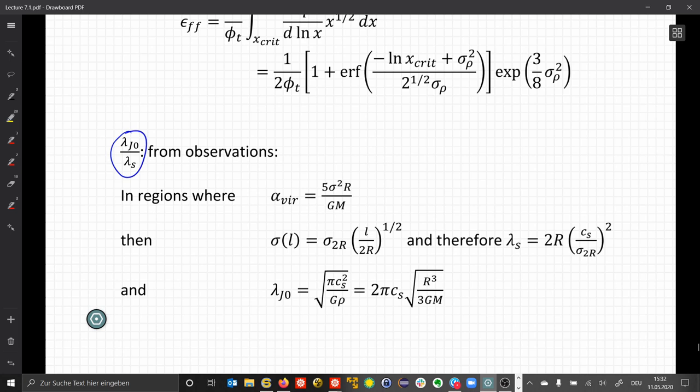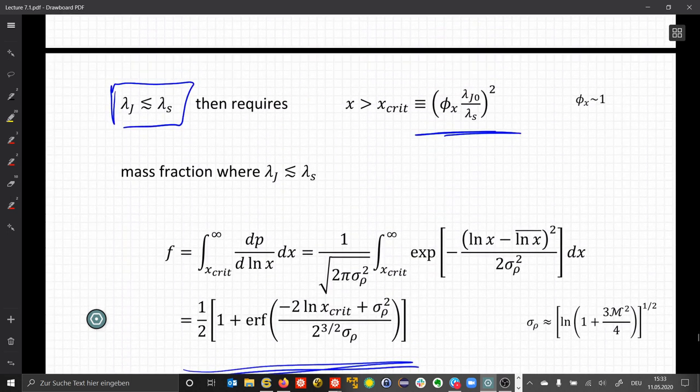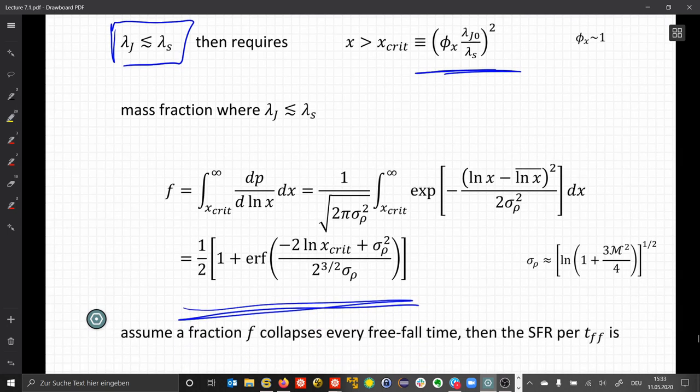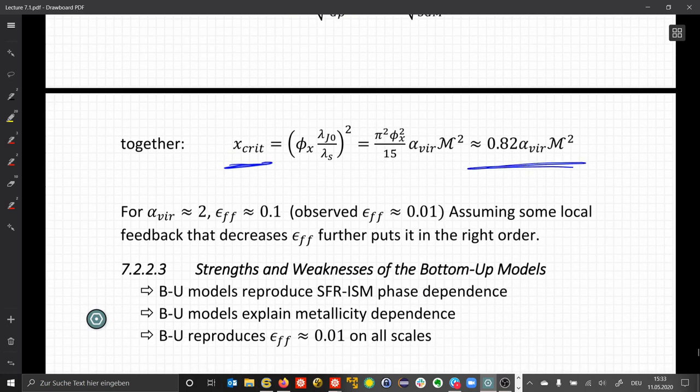We find this here from observations. We find a virial ratio that can be written here in terms of the radius and the velocity dispersions. Then our line-width-size relation can be written like this. And this gives us a sonic length as this term here. Writing this all together, this gives us a critical density. x was here the ratio between the scales, not the density, but the scales. And this can be written in units of the virial ratio and the Mach number.